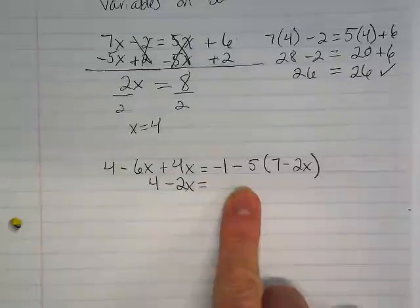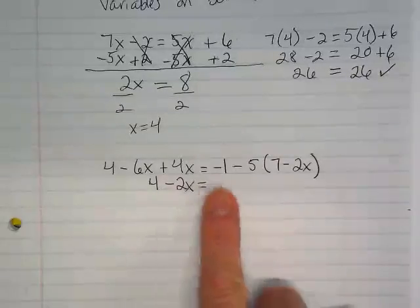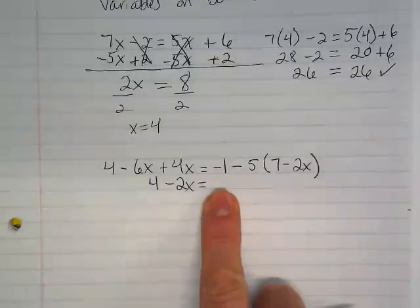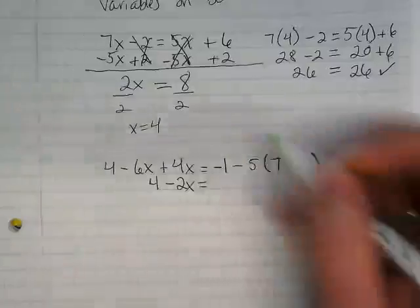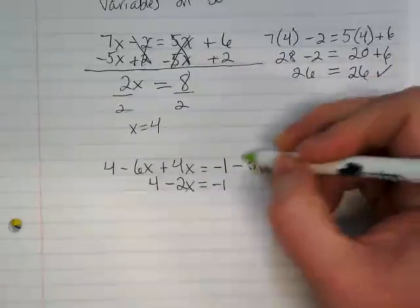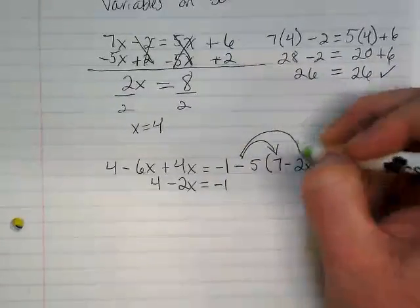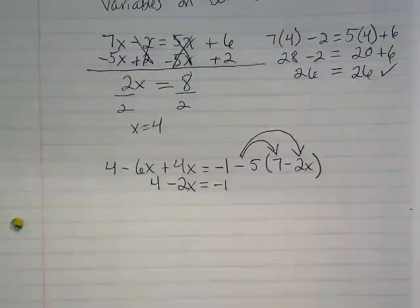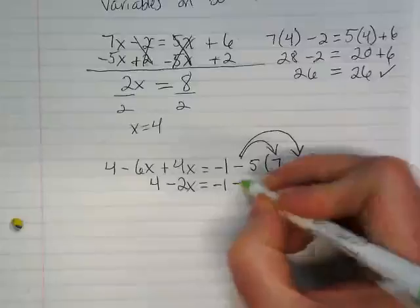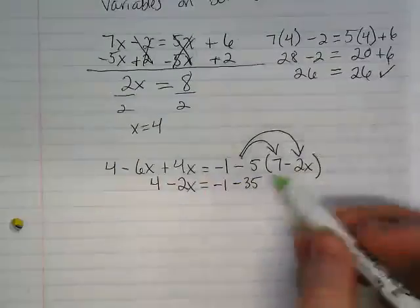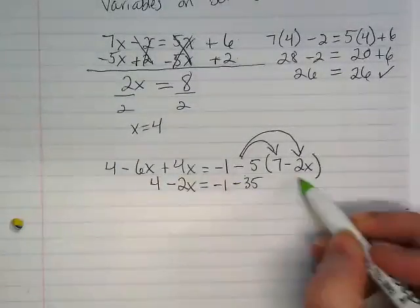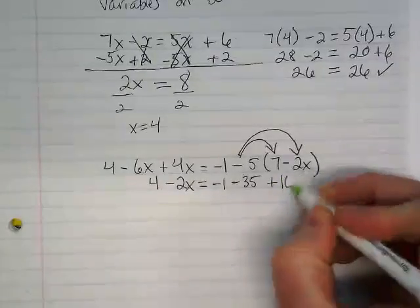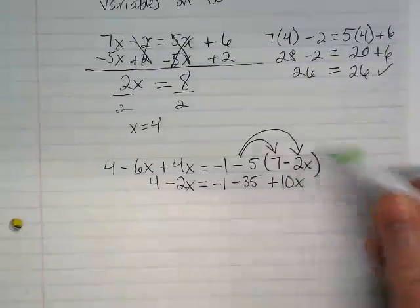The right side of this equation is really kind of messy, isn't it? I have a negative 1 first, and I'm not going to do anything with it at first. I'm just going to move it down. But this negative 5, I have to distribute. Right? Negative 5 times positive 7 is going to leave us negative 35. Negative 5 times negative 2x? Positive 10x.